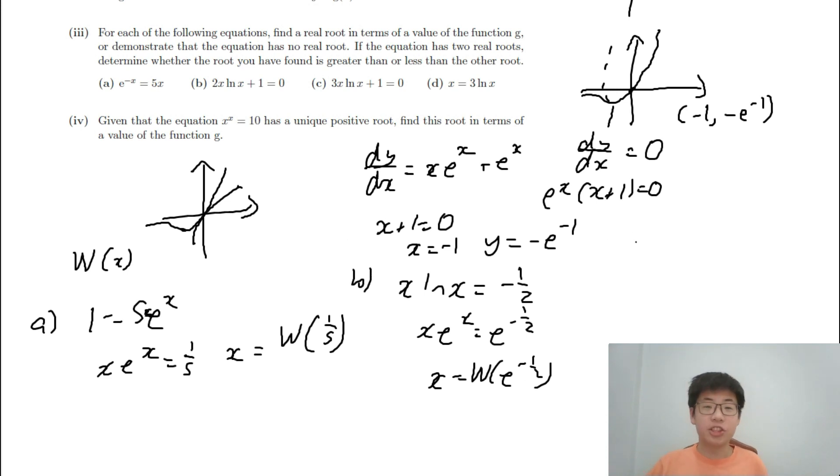Part c. 3x log x + 1 = 0. We can just change it to W(e^(-1/3)). And it still works because it is less than -e^(-1).